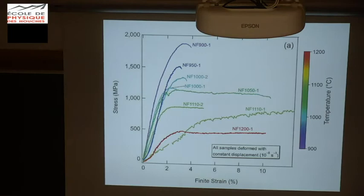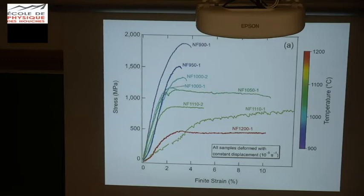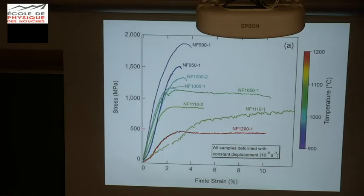Here's the deformation curve — stress in megapascals as a function of finite strain, going up to 10%. We deform at 900°C, where the sample is too hard and breaks. Then we increase the temperature: we succeed in reaching steady states. And here we have the hottest temperature of deformation — 1200°C — with a nice steady-state curve. We get steady state even though the maximum steady-state stress is well above the confining pressure of 300 MPa.